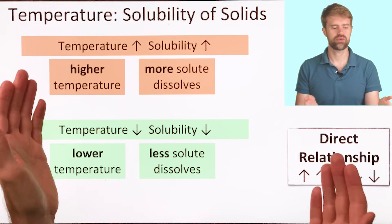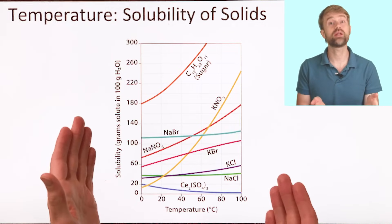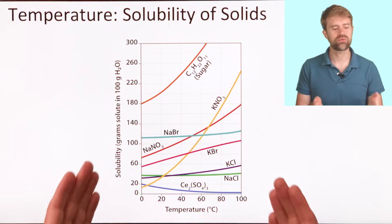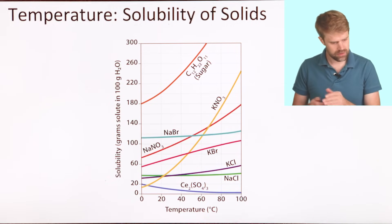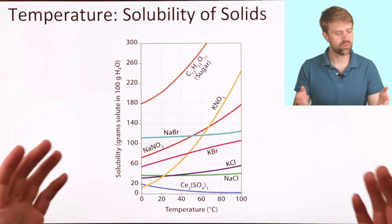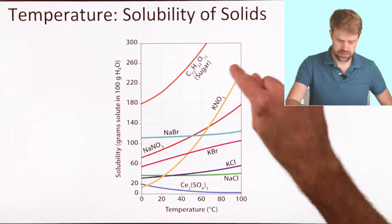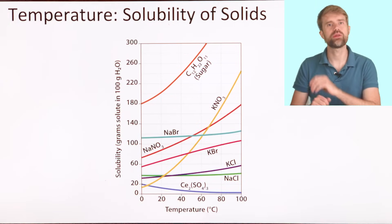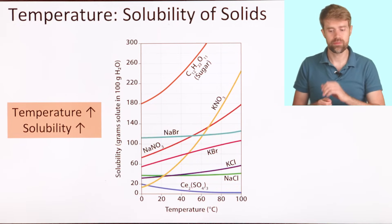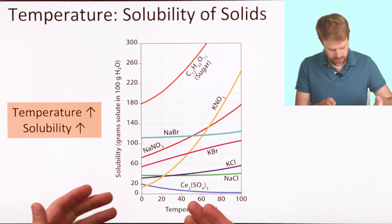Now what we see here is typically true, but the full story is a little more complicated. Let's take a look at a graph. This shows the solubility of various solids in water at different temperatures. This axis is temperature, and this axis is solubility — how much solute can dissolve in a certain amount of water. The different lines are different chemicals. This is potassium nitrate, and we have sugar, and a whole bunch of others. And just looking at this, you can see that most of these lines really go up. So the solubility of most solids in water increases as the temperature of the solution increases.